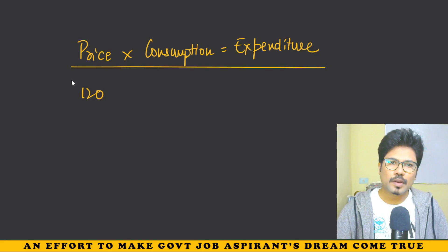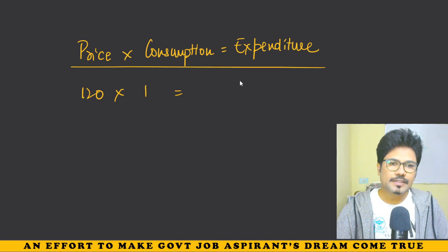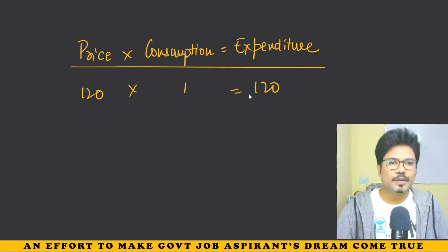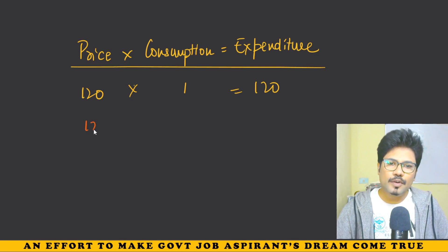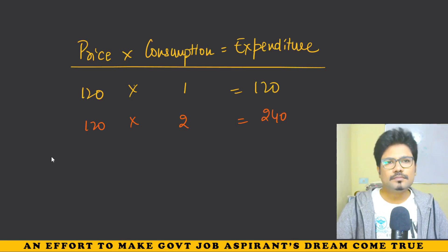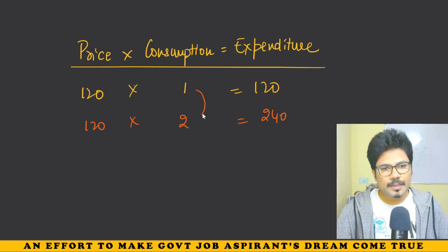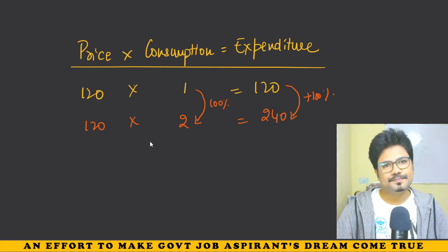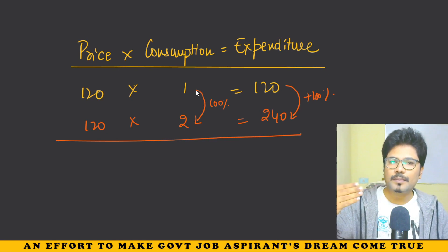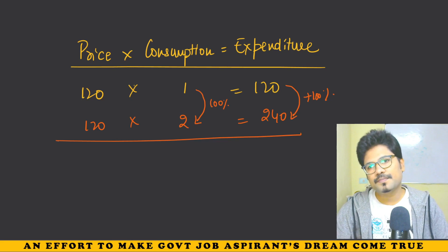Suppose one dairy milk silk chocolate costs 120 rupees. My expenditure is 120 rupees. Now what happens is, if the price doubles to 240 rupees, my cost becomes 240 rupees. So if consumption stays the same and price increases 100%, expenditure also increases 100%. This is the first case.